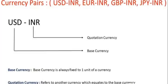To buy one euro we have to pay around 90 rupees, to buy one pound we have to pay 102 rupees, and to buy one Japanese yen we have to pay around 0.62 rupees — that is around 62 paise. The quotation currency will always be rupee. The base currency is always fixed to one unit; the quotation currency refers to the other currency which equates to the base currency.